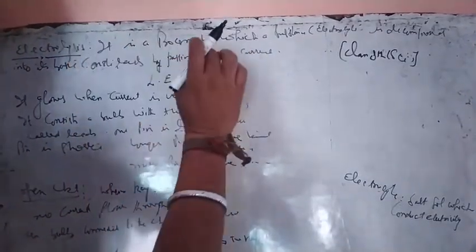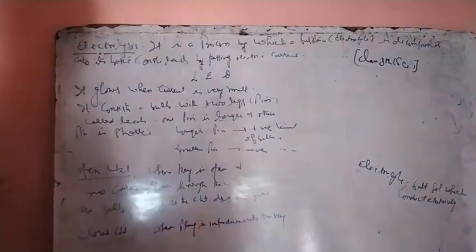What do you mean by electrolysis? This is the definition of the process. Whenever it is the process by which a substance is decomposed into basic constituents by passing electric current, that is called electrolysis. I mean to say that by which a substance is decomposed into its basic constituents.